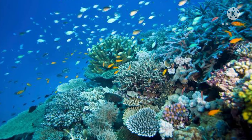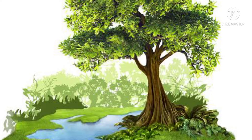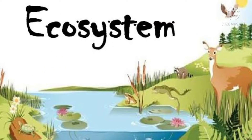Forest, coral reef, and mangrove swamps ecosystems need to be protected and conserved. We need to give importance to these ecosystems because they provide us with our needs. The ecosystem is an environment where both living and non-living things exist and interact with one another.